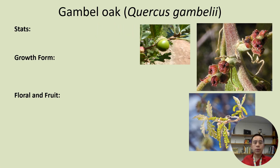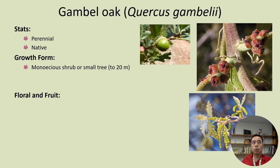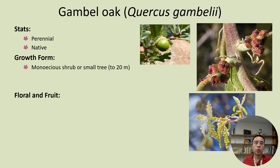Our first species is Gambel oak, or Quercus gambelii. In terms of its stats, it's a perennial and a native species and often grows as a monoecious shrub or a small tree. Monoecious means the plants are not sexually dimorphic, so one single plant will have both male and female flowering portions.